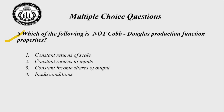Question 5: Which of the following is NOT a property of the Cobb-Douglas production function? (1) Constant returns to scale, (2) Constant returns to inputs, (3) Constant income share of outputs, (4) Inada condition. The answer is choice 3 — constant returns to inputs is not a property; the correct property is positive but decreasing returns to inputs.